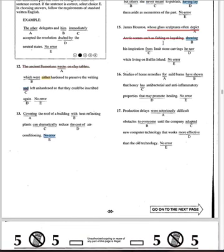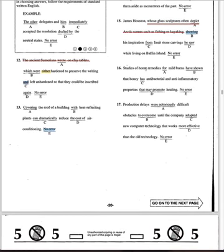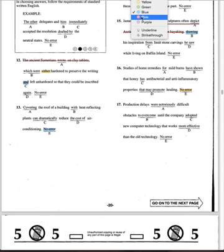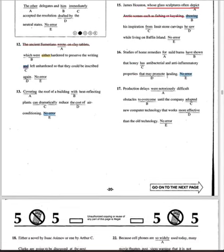Number 16: 'Studies of home remedies for mild burns — studies have shown that honey has antibacterial and anti-inflammatory properties that may promote healing.' Honey is singular, so 'has' makes sense as singular. I don't see any errors here.